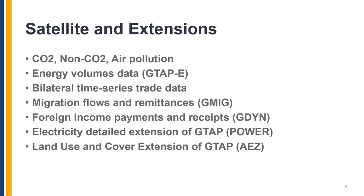Some of the satellite accounts and GTAP extensions are listed here. We have, as a standard with the GTAP database release, a file that accounts for CO2 emissions and energy volumes data. When we combine them we can use this with the GTAP-E model. We also have bilateral time series trade data, non-CO2 emissions, and air pollution information. We extend the GTAP database to account for international migration flows and remittances to be used with the GMIC2 model. We also have an extension that considers foreign income payments and receipts that can be used with the G-DYN model.